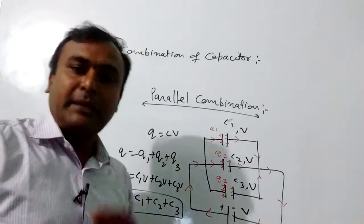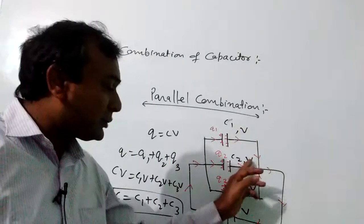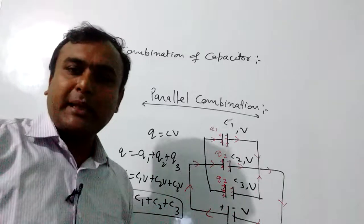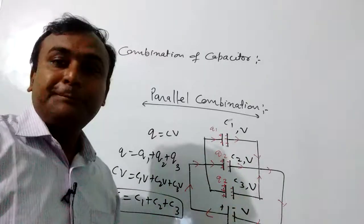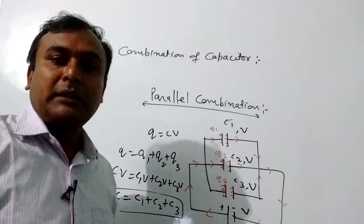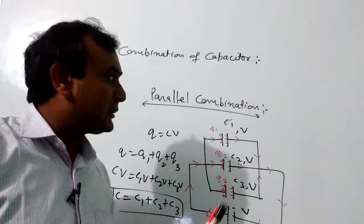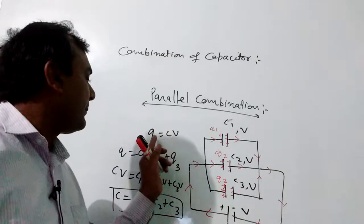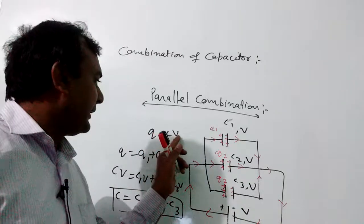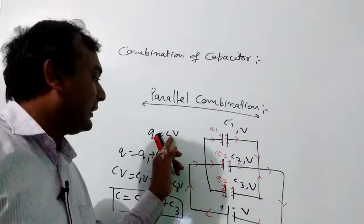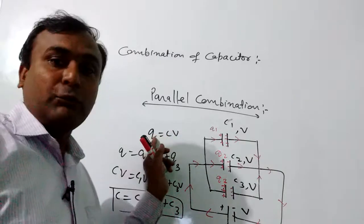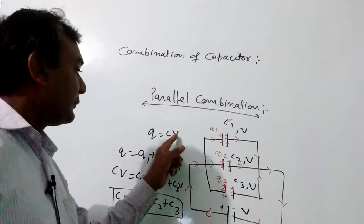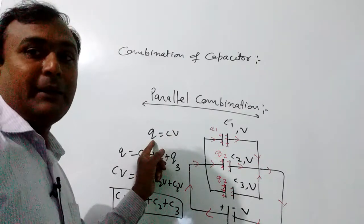In a parallel combination, the potential is the same across all capacitors. The charge quantity differs because Q equals CV — V is the same but C is different, so Q is different for each capacitor.